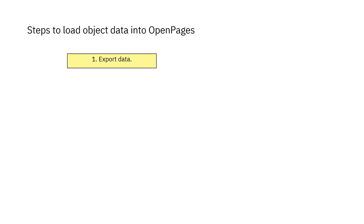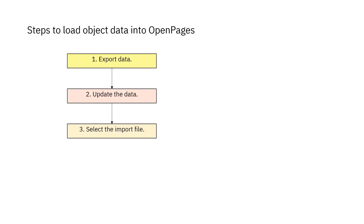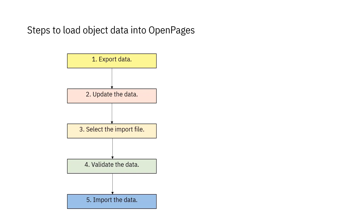First, you export data for an object type. You do this because the export creates a Microsoft Excel workbook that you can use as a template. The columns are created for you and the default parameters for the import are included in the workbook. Next, you update or add data in the workbook. In OpenPages, you select the workbook to import, have FastMap validate the data, and finally import the data.